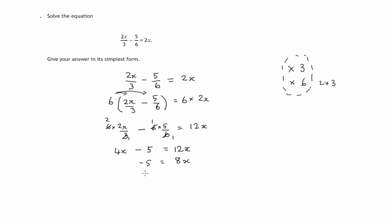Let's write it the other way around. 8x is equal to negative 5 and to get rid of this 8, let's divide both sides by 8.